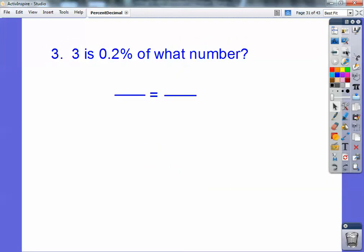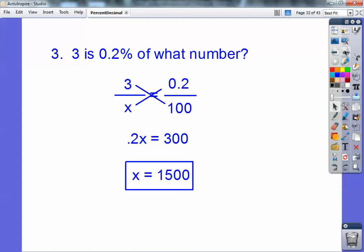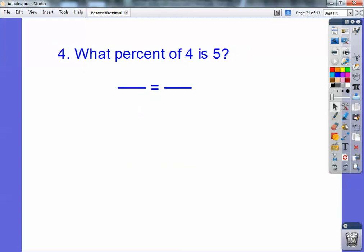So 3 is 0.2% of what number? 100 goes here. My 0.2 goes right here. Here's the word 'of'. It says of what number, so that time this is going to be my x right here. So my leftover stuff is this 3 right here. They all work like that. And then you can cross-multiply, and then 0.2 goes into 300, 1500 times.